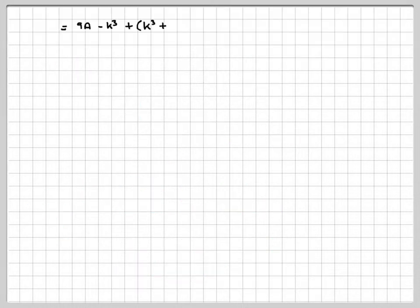So we're just writing that last line out again. Right, we'll just simplify this a little bit further. So we get 9a minus k cubed plus k cubed plus 9k squared plus 27k plus 27.